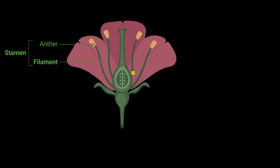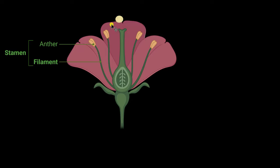A flower is the reproductive part of a plant. In this picture, as you can see, this flower has both the male and the female reproductive part. I have labeled only the male reproductive part, which is called the stamen. The stamen consists of a long stalk-like thing called a filament, and it has a knob-like structure on top called the anther. The anther is the fertile part, and it produces pollens. This pollen travels to the female reproductive part of the same or different flower and fertilizes the egg to produce seeds and fruits. In this video, we will talk about how this pollen is produced inside the anther.